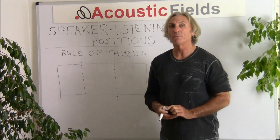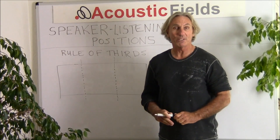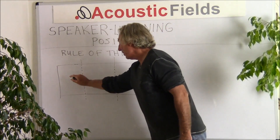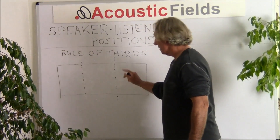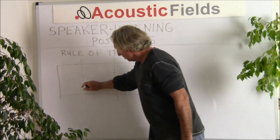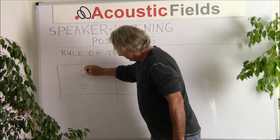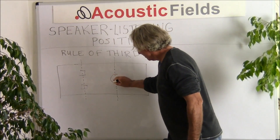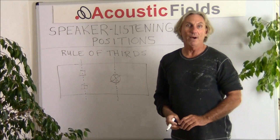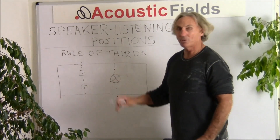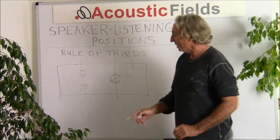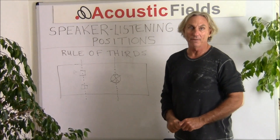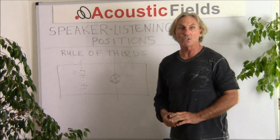Let's start with the rule of thirds. What the rule of thirds basically says is divide your rectangular room into thirds. You have a cross line here and a cross line here, giving you three sections to your room. Place your speakers left and right channel along the first third dividing line of the room. Your listening position goes on that other divisional point for the second third.